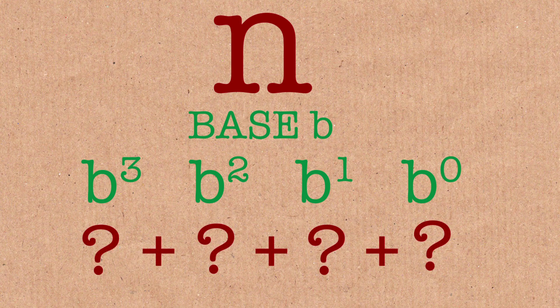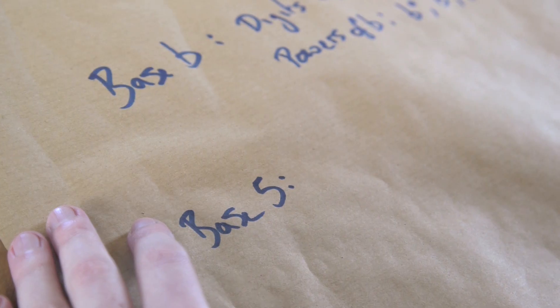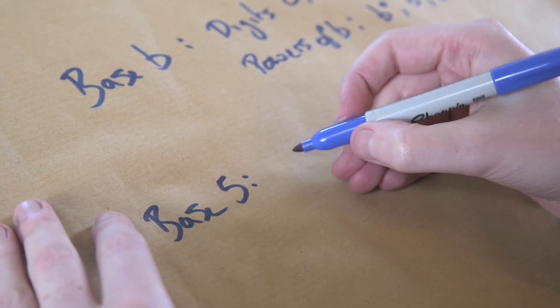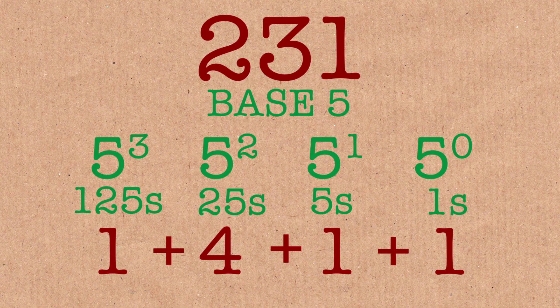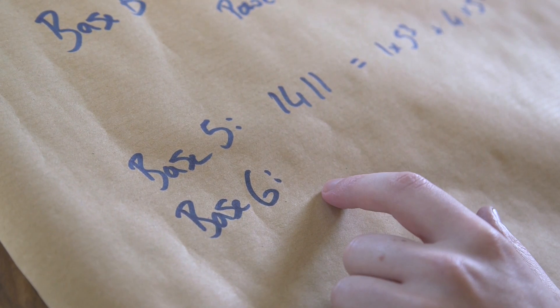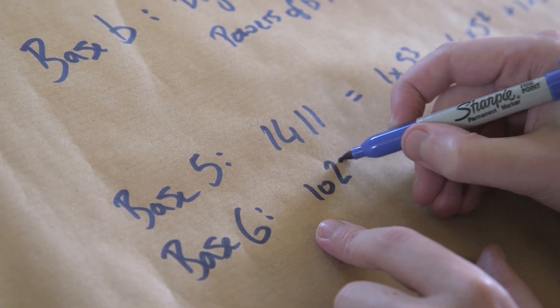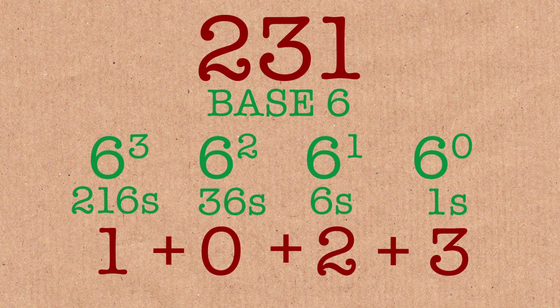Shall we have a little bit of practice? Let's do it in base 5. Take 231 — in base 5 it's written as 1, 4, 1, 1. It's still the same number, still 231, still has the same size. In base 6, it's written as 1, 0, 2, 3. So we can write numbers in different bases.